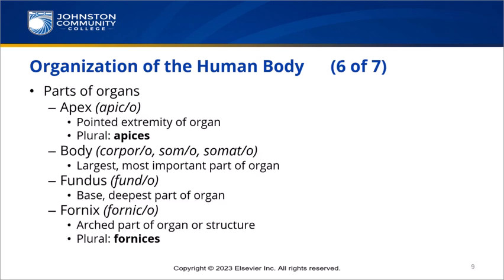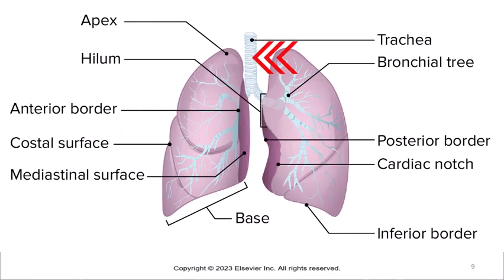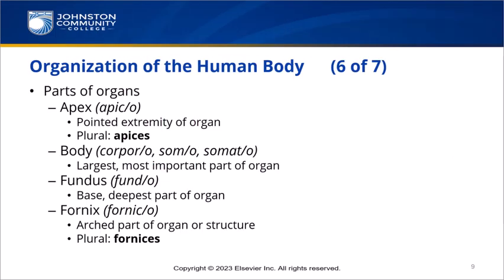Throughout your career in healthcare, you will not only need to know the names of organs, but you will also need to recognize the locations within the organs. There is a standard terminology to describe locations. The apex is the pointed extremity of an organ. In an image of the heart, you can see that the apex is at the bottom, whereas in an image of the lungs, the apex is at the top. The plural of apex is apices — if a term ends in EX, it can be made plural by dropping the EX and adding ICES. The body of an organ is the largest or most important part of the organ. A synonym is corpus. Note the combining forms are corporo, somo, and somato.